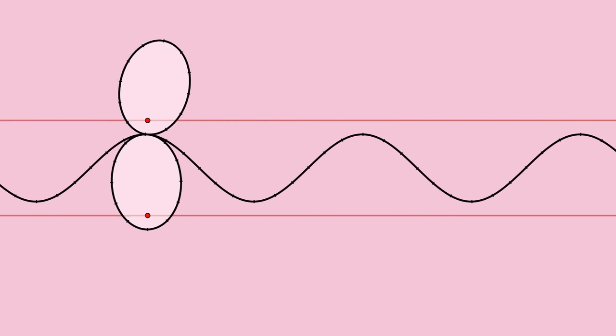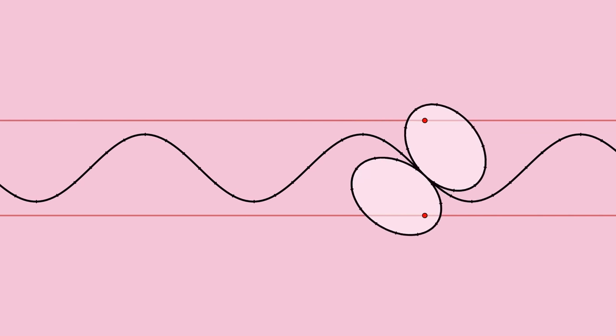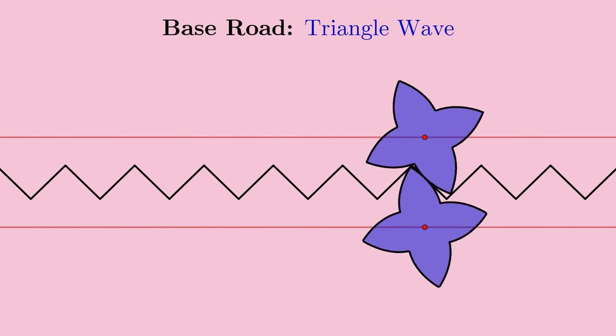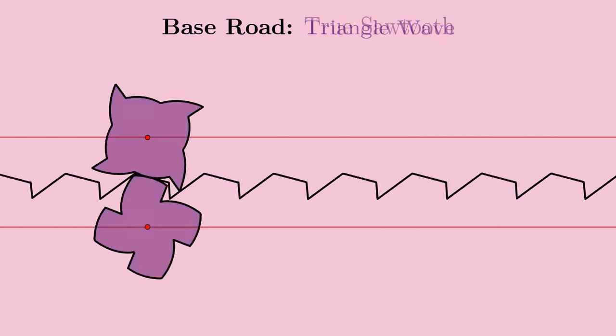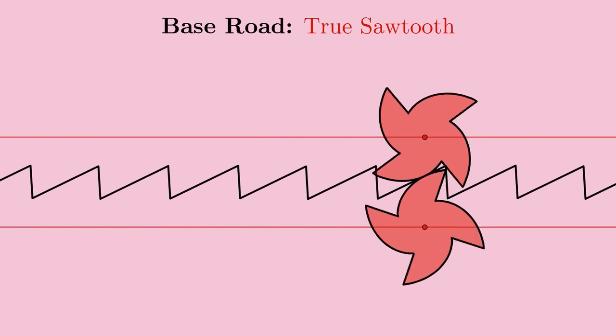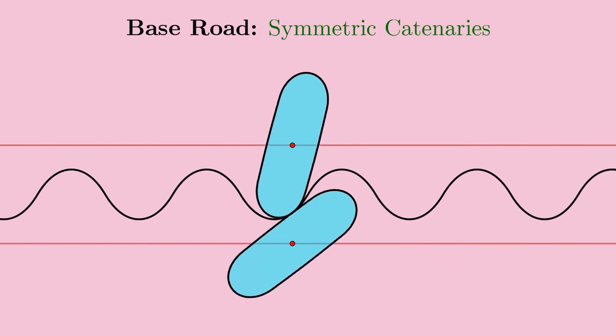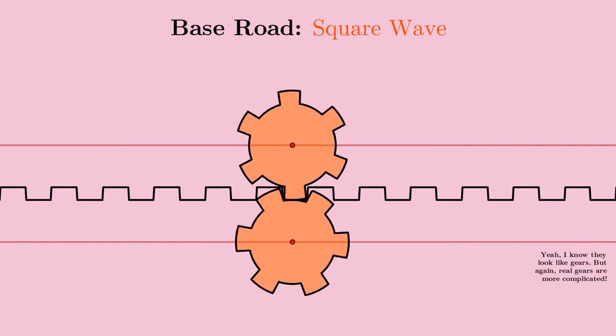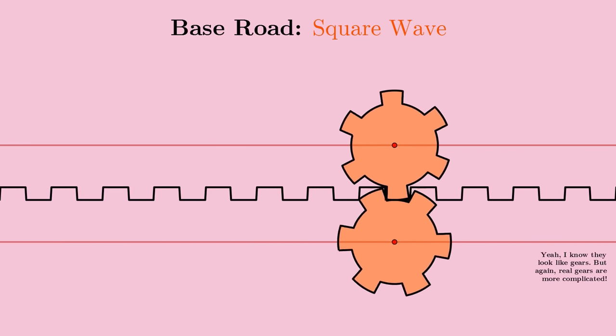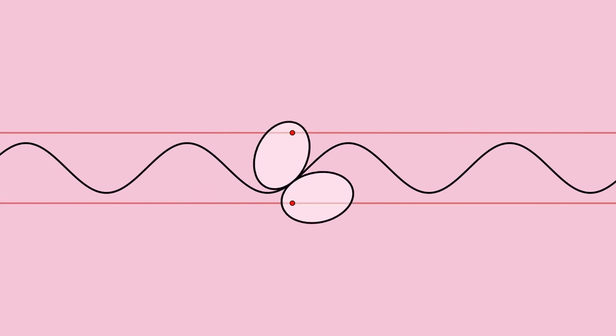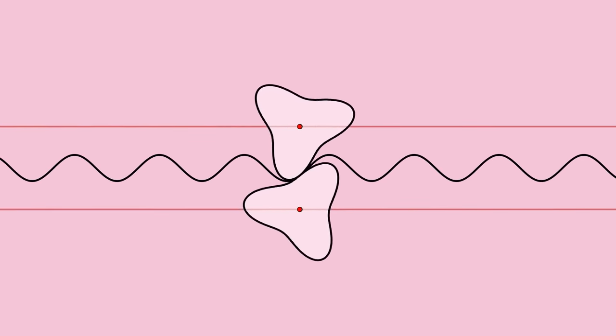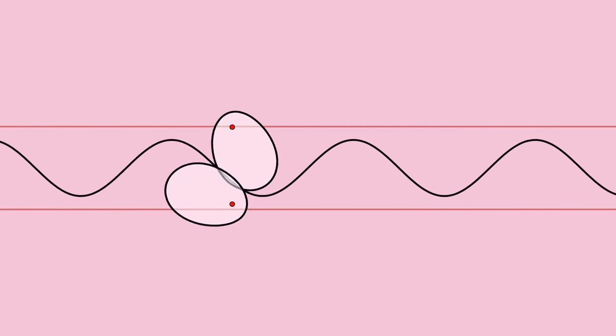And of course, there's an infinite variety of rotationally symmetric road curves you can choose from, leading to an infinite variety of self-coupling wheel pairs. Here are some of my favorites. You can even generate different wheel harmonics by widening the distance between the road curve and the axle paths, or equivalently by resizing the road curve.